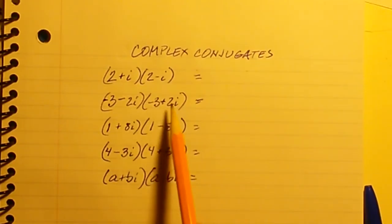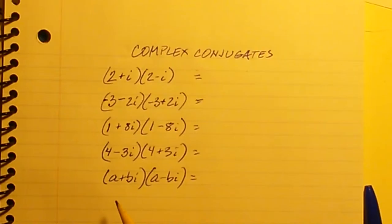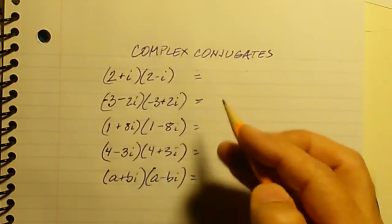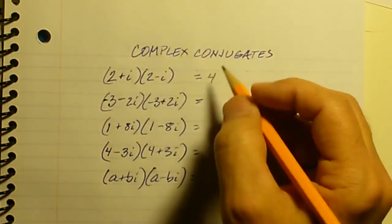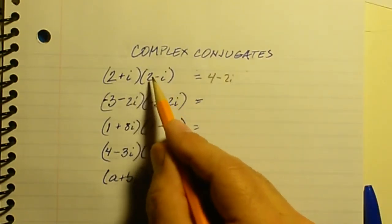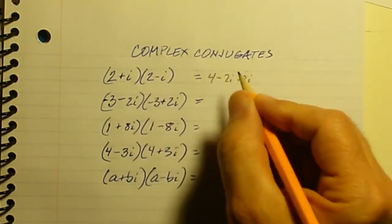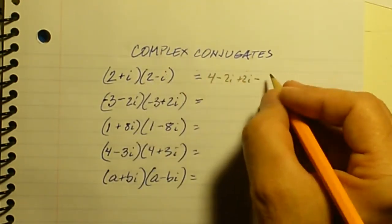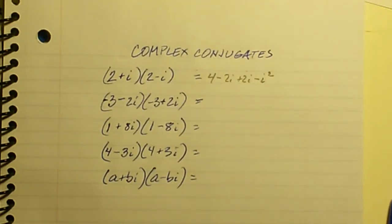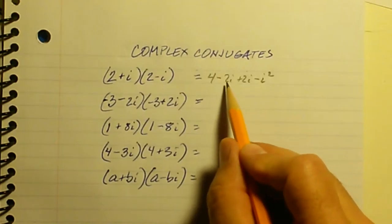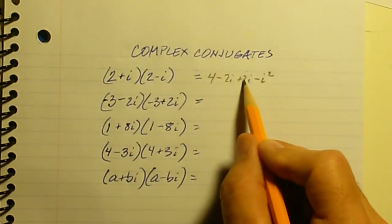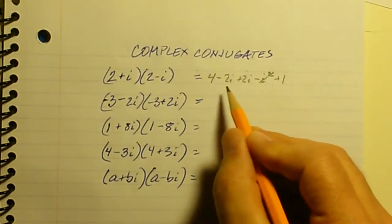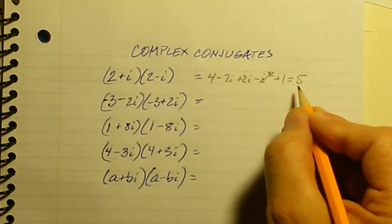Now what's so special about this? Well, if I multiply 2 plus i times 2 minus i: 2 times 2 is 4, 2 times negative i is minus 2i, 2 times positive i is plus 2i, and i times negative i is negative i squared. The middle two terms add up to zero, and negative i squared is plus 1, so I end up with 4 plus 1, which is 5.